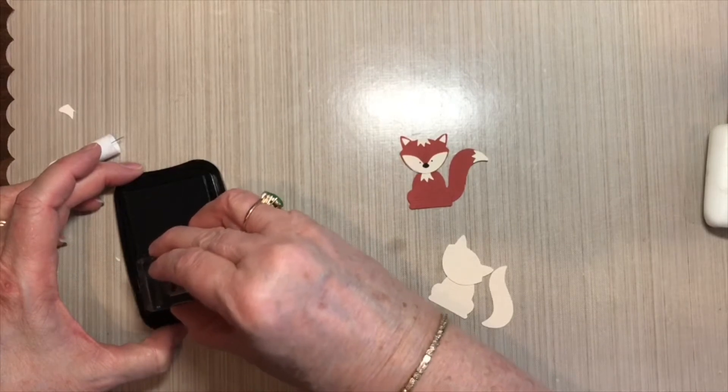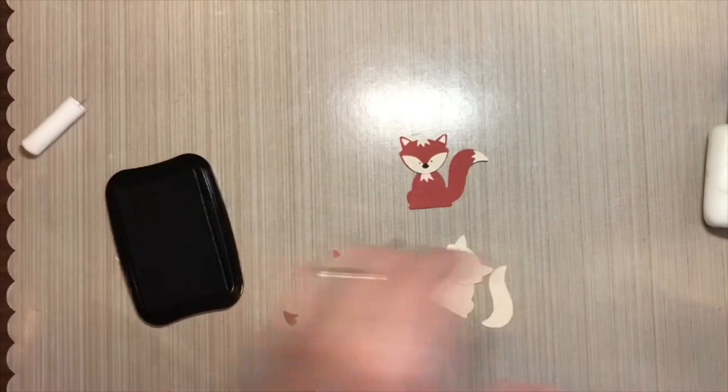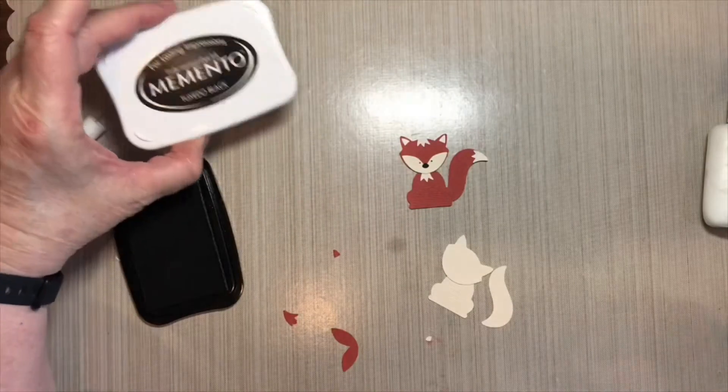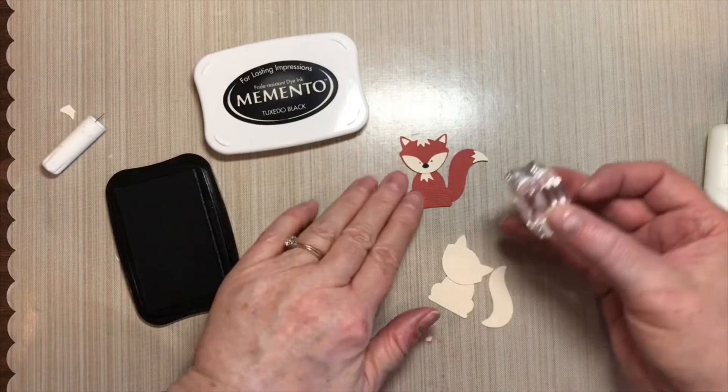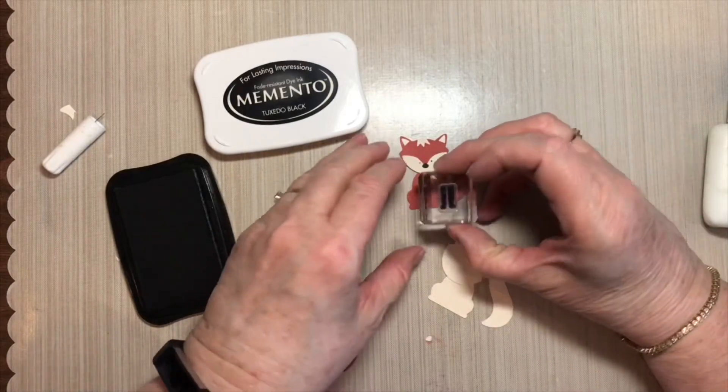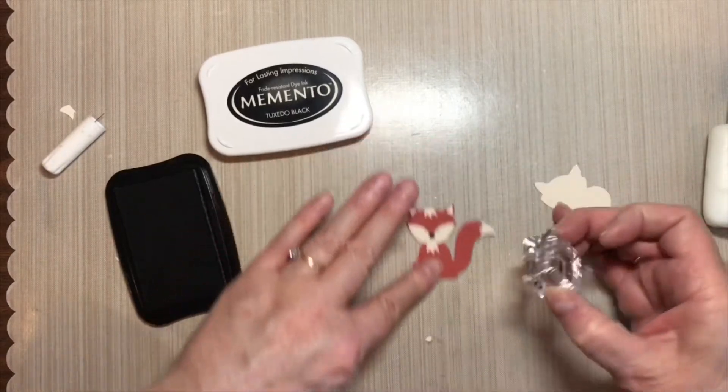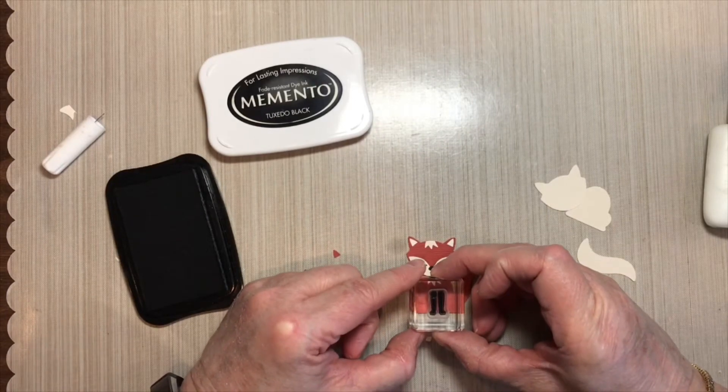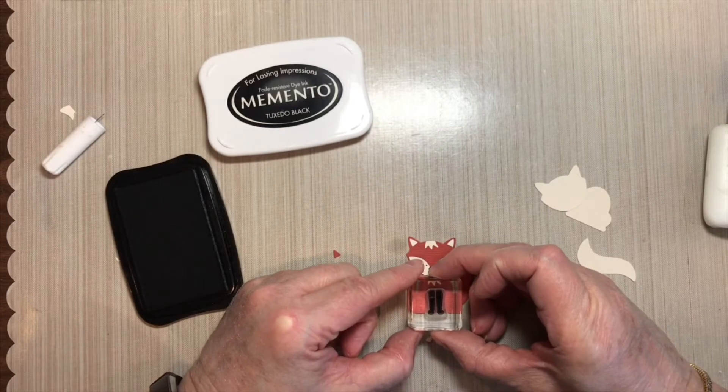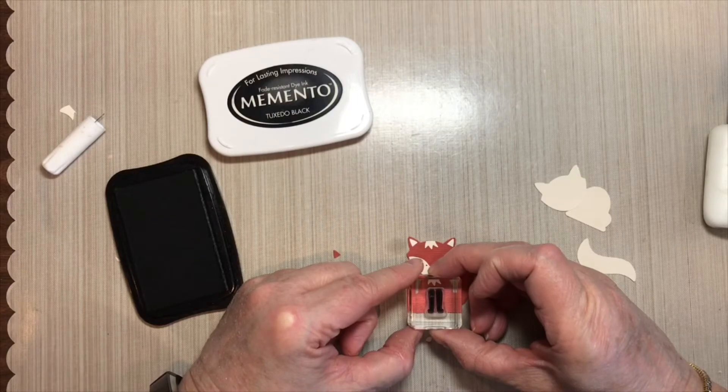And here I am using memento tuxedo black ink that seems to be about my favorite for using on items. Now again it helps if you get directly over it to stamp.